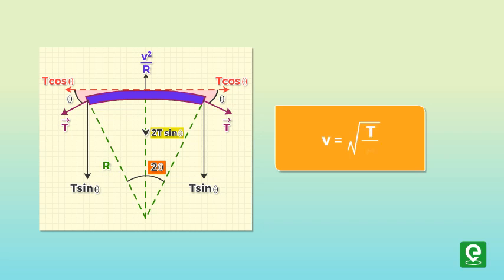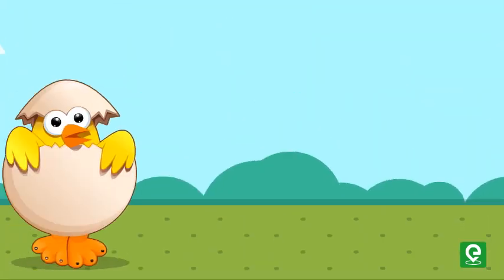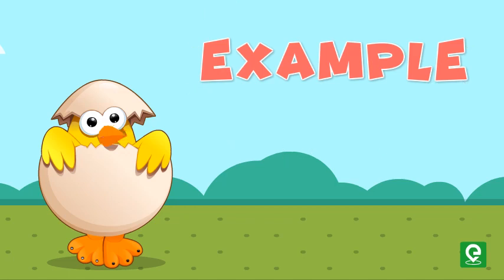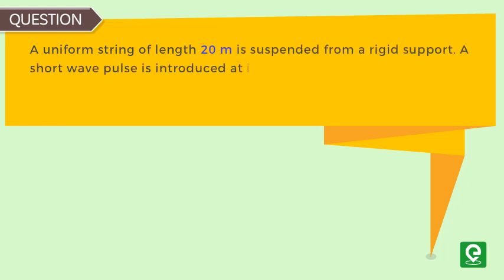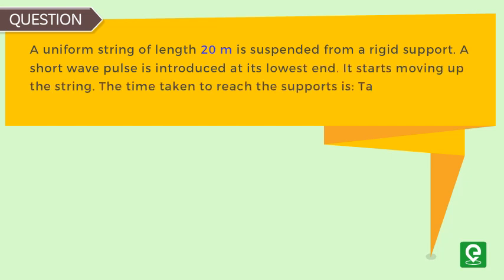Let's solve an example to understand this concept better. Question: A uniform string of length 20 meters is suspended from a rigid support. A short wave pulse is introduced at its lowest end. It starts moving up the string. Find the time taken to reach the support. Take g equal to 10 meters per second squared. This question was asked in JEE Main 2016.